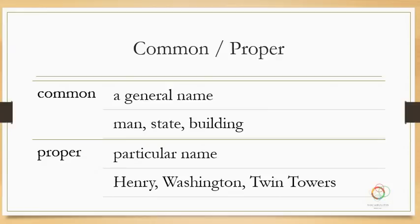We're talking about common nouns versus proper nouns — that is one division of talking about nouns. With all nouns you can describe them as common or proper. Common means it's a general name, just a regular word that you use like man, state, building, car, dog, or whatever. Those regular words are all common nouns.